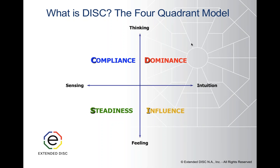These are groups of descriptors — singular descriptors that describe each of the DISC quadrants, but they're not set. Sometimes you might hear someone say the word 'driver' instead of 'dominance' for the D style. Compliance — sometimes people use the word 'correctness' or 'conscientiousness.' So there's no set groups of descriptors. This is probably the last time you'll hear me use one-word descriptors, because sometimes people will disassociate themselves from a DISC style because they don't strongly align with these one-word descriptors.